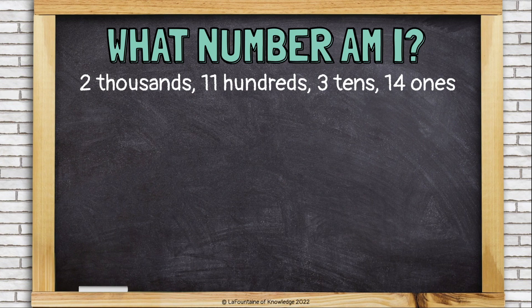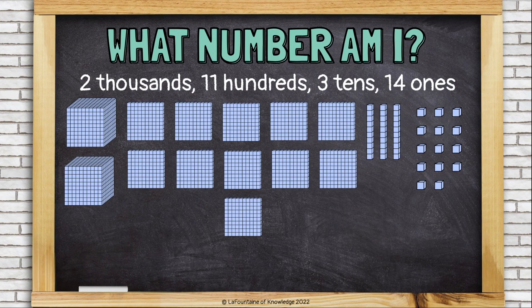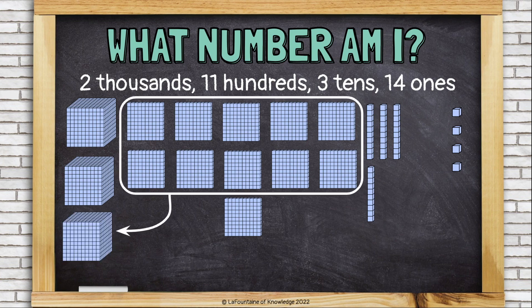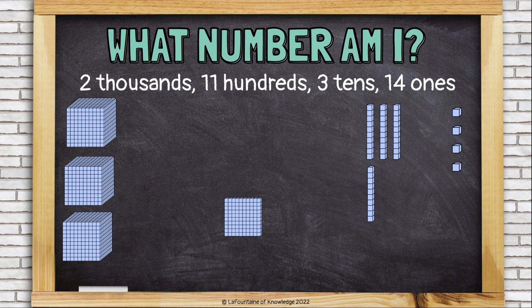This time I have 2 thousands, 11 hundreds, 3 tens, and 14 ones. Let's start in the ones place again by bundling up 10 ones to create a 10. The tens place looks okay — I can put a 4 in the tens place, but I have way too many hundreds. Let's turn 10 hundreds into 1,000. Now I see that my number is 3,144.